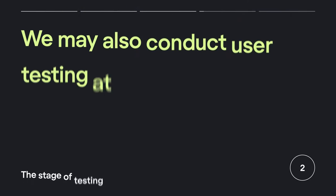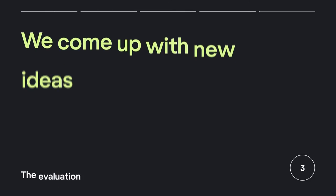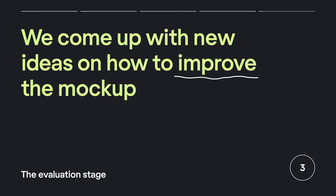The PM then highlights the ideas they like and the ones they don't. We also conduct user testing at this point. In the end, we gather feedback and take time to reflect on it — that's the stage of testing. Next, we come up with new ideas on how to improve the mockup based on the feedback we got. That's the evaluation part, and that closes the loop.